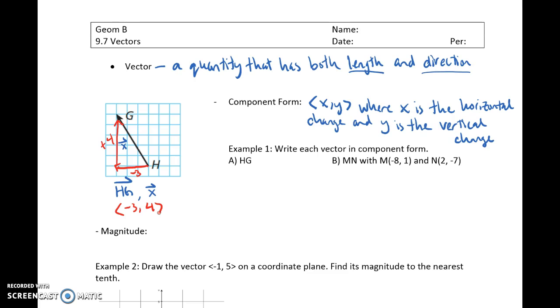So again, this vector HG, it's missing that little half arrow, and component form is negative 3, 4. You can also look at this vector, it's also missing that little half arrow, with initial point M and N, and write that in component form by just looking at the differences.